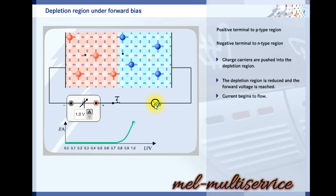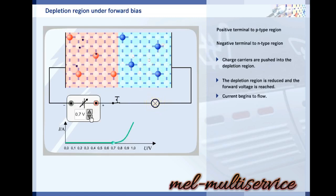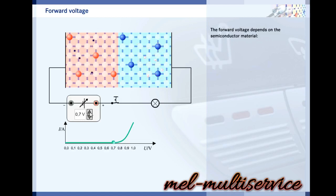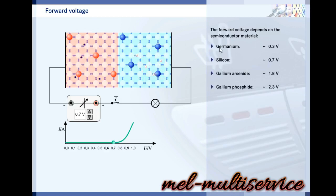If the voltage is increased further, current flows through the semiconductor. At 0.7 volts, the depletion region disappeared and current began to flow. An expert could tell you straight away that you were looking at a silicon diode, because the forward voltage depends almost entirely on the semiconductor material. Other factors such as the design and the temperature have only a negligible effect.